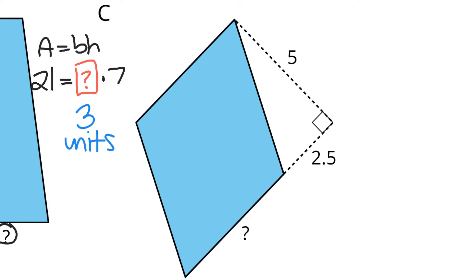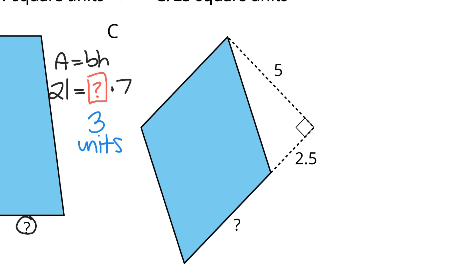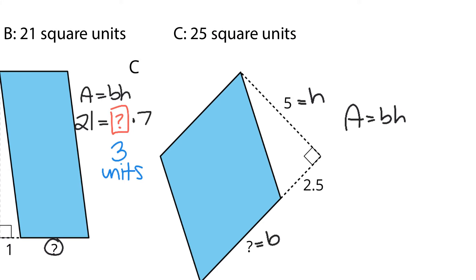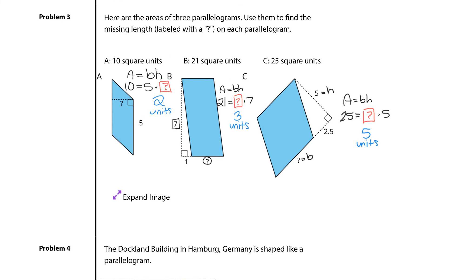Looking at C now. I would call this 5, the height, and this question mark, the base. And so if area is equal to base times the height, and I just noticed I cut off the 25 there, 25 is going to equal my, once again, I don't know my base times my height of 5. Well what times 5 is 25? About 5. So 5 units is my solution to C, and that's Question 3.